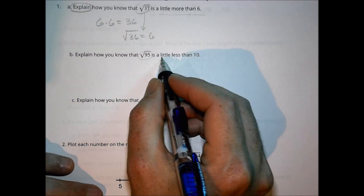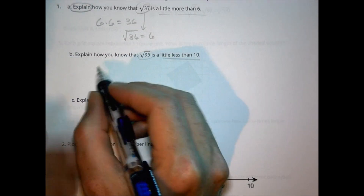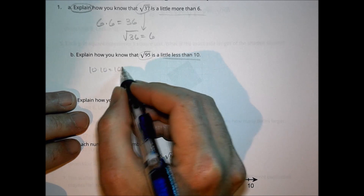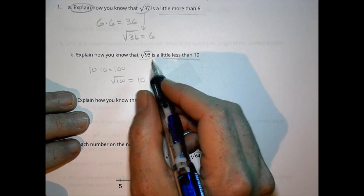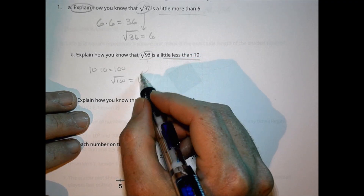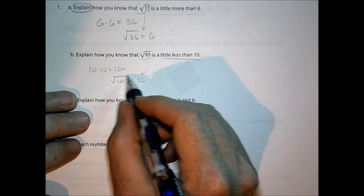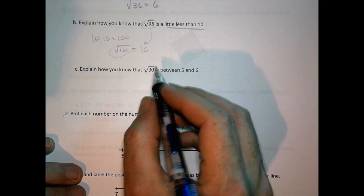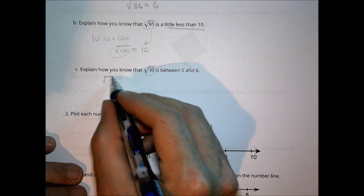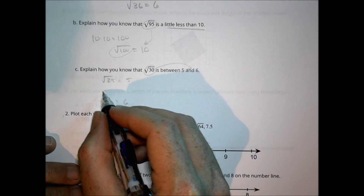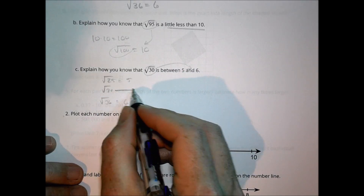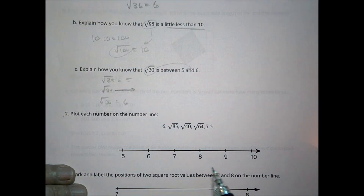Part B: how do you know that the square root of 95 is a little less than 10? Because 10 times 10 is 100, so the square root of 100 is 10. The square root of 95 has to be a little less than 10. For Part C: the square root of 30 is between 5 and 6 because the square root of 25 is 5, the square root of 36 is 6, and root 30 falls between those two.